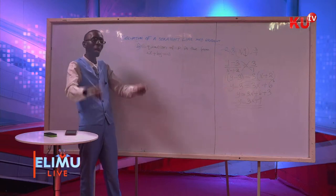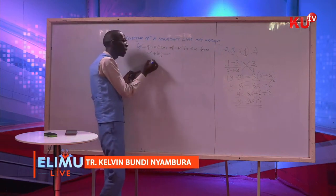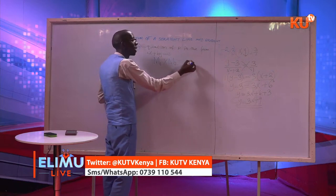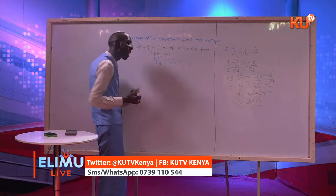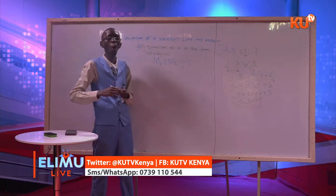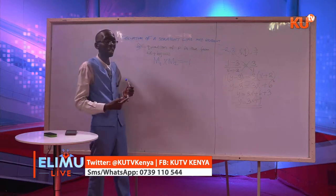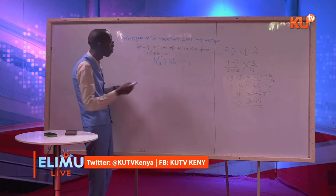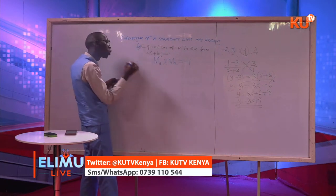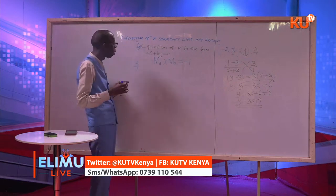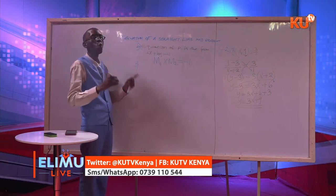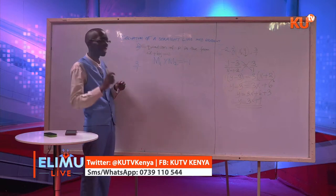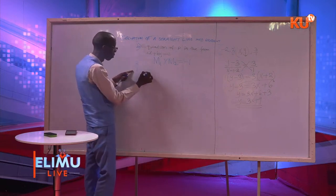Back to our formulas. For perpendicular lines, the gradient of line 1 multiplied by the gradient of line 2 is equal to negative 1. There is an easier way of getting the gradient of a line perpendicular to another line. If the gradient of one line is 3 over 1 and you want to get the gradient of a line perpendicular to this, you will reciprocate: write the reciprocal of 3 over 1 and change the sign, so it will be negative 1 over 3.